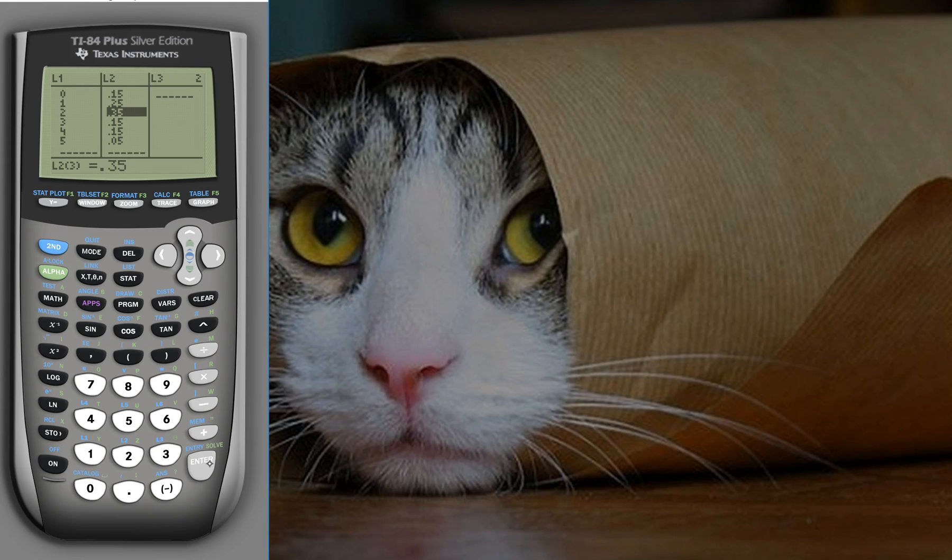Once you do this next step, you want to make sure that your n, your sample size, is one, because that's saying everything in this row summed up to one. Once all your data is in, go back to stat and over to one-var stats.